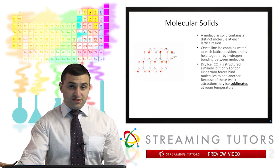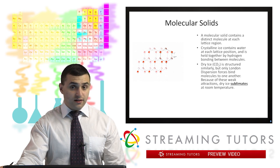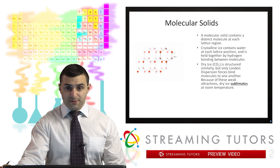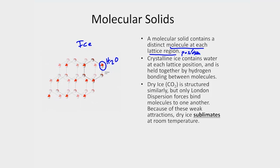Anyway, next up we have molecular solids. So molecular solids also have a repeating structure, except that instead of having just an atom at each lattice position, they have a molecule at each lattice position or lattice region, whatever terminology you want to use. So on the left here, we have water as a solid, as ice. So what we see is that we see this crystal structure forming, except instead of having an atom like an oxygen or hydrogen in each place, we have an entire water molecule occupying each lattice.